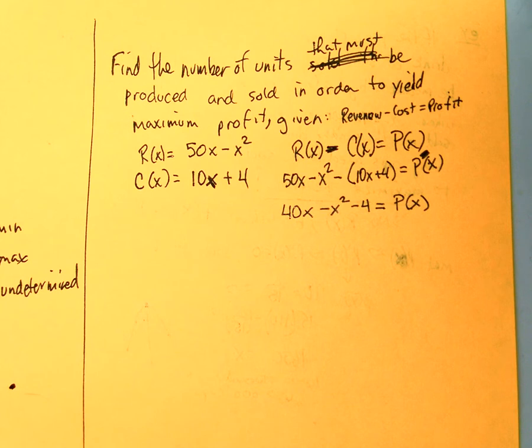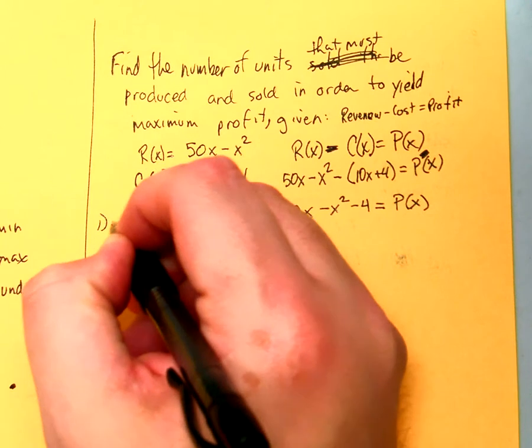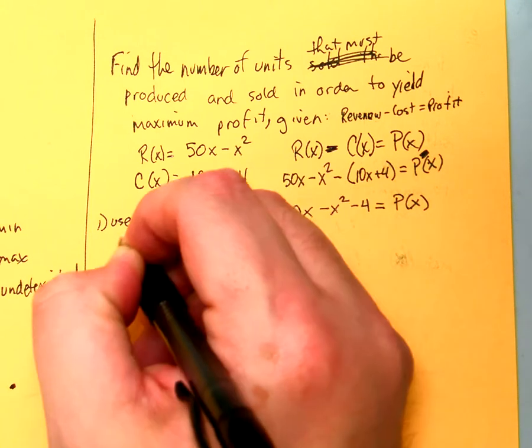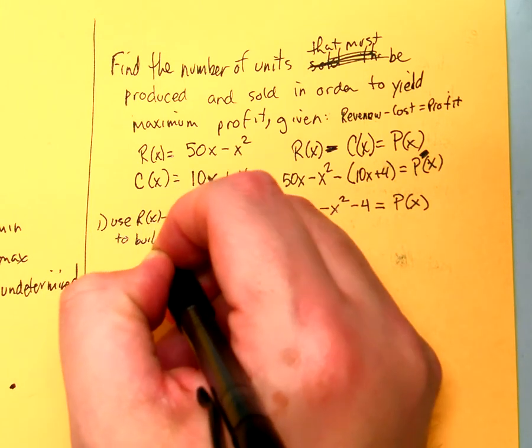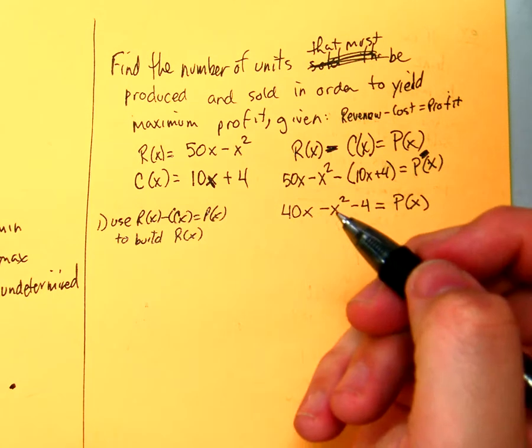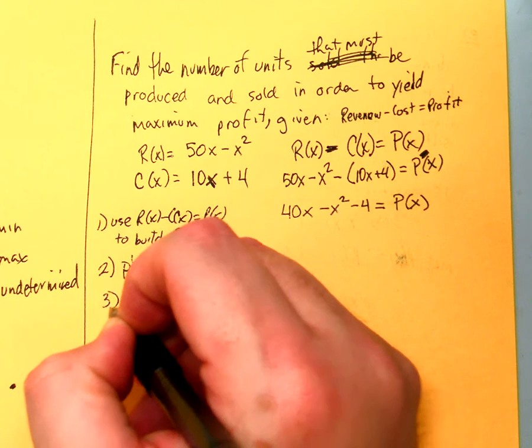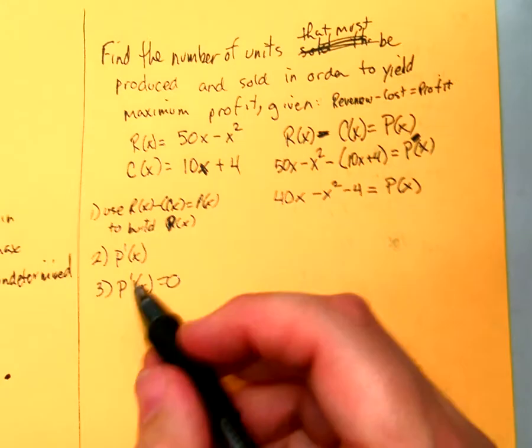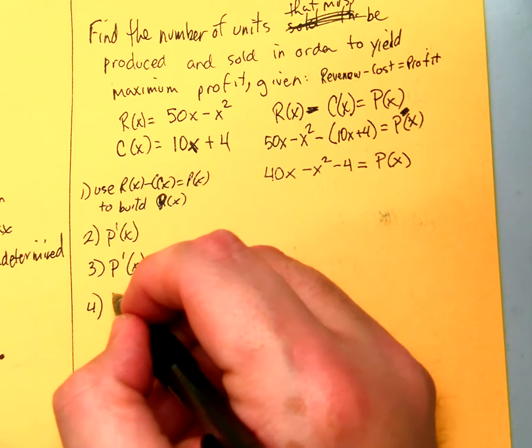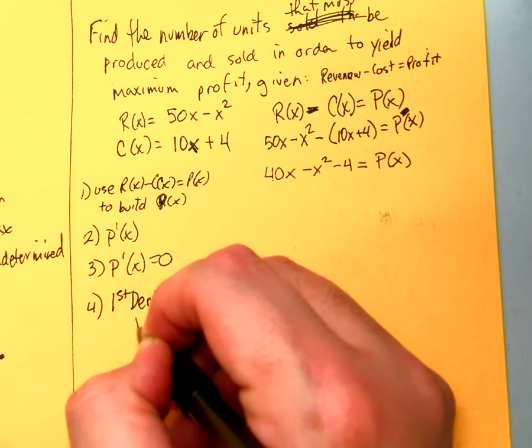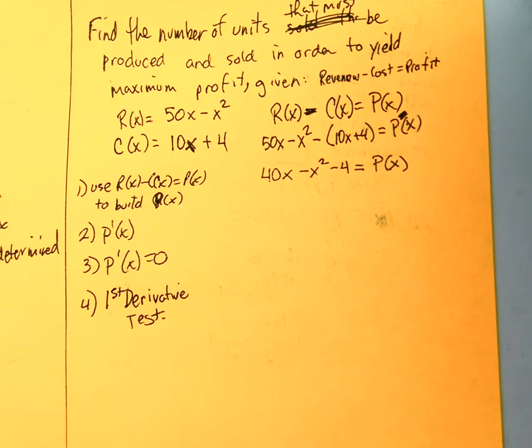Now we want to maximize profits, correct? So the first thing we have to do is use R of X minus C of X equals P of X to build P of X, the profit equation. 2, P prime of X. Then 3, what do we do with P prime of X? Set it equal to 0. And then what's 4? The first derivative test. See? So just checklists. Yeah, to build P of X.